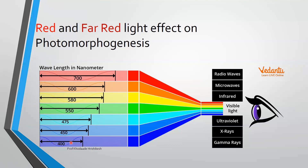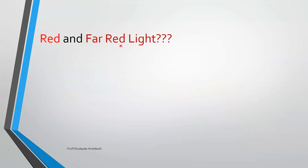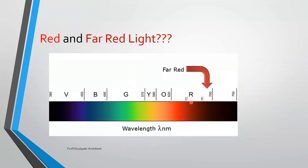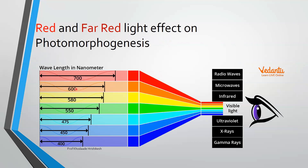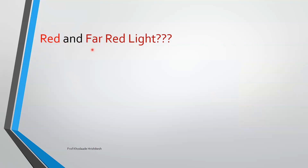Blue light has a 400 nanometer spectrum and red light has 600 nanometers. The deep dark red is at 700 nanometers. You have to differentiate between red and far red light. Red light is reddish in color, while far red light is blackish in color. Far red light is more darkish red, close to black, with a wavelength around 700 nanometers, whereas red light wavelength is close to 600 nanometers.